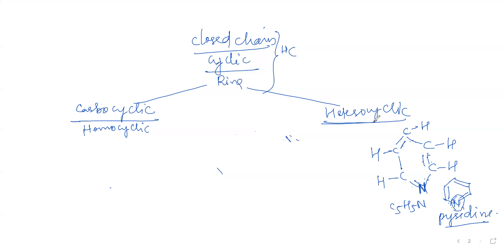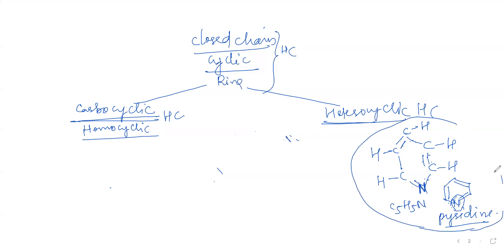That is why it is heterocyclic — 'hetero' means different. If the ring is made purely of carbon atoms, it is carbocyclic or homocyclic. A few more compounds like thiophene and furan also exist in this category, and we will discuss those in coming classes. Mainly we will focus on carbocyclic and homocyclic hydrocarbons.